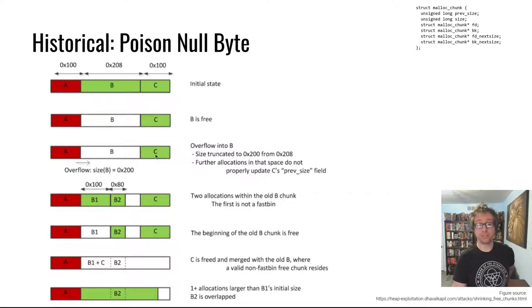An interesting thing that happens is that when B is free, that means C's previous size is being used. If you recall from the previous video, when you allocate more, create more allocations to fill up B part by part, you make small allocations, C's previous size should be updated. But because B's size is too small, what is actually updated is some data right here, before C's previous size.